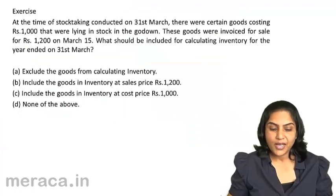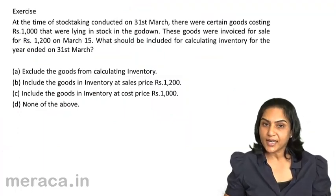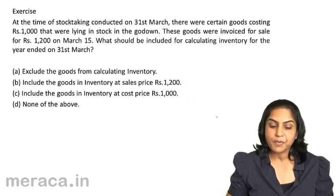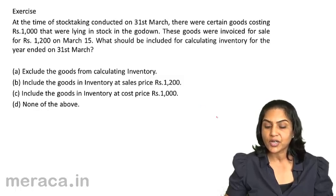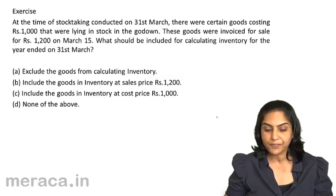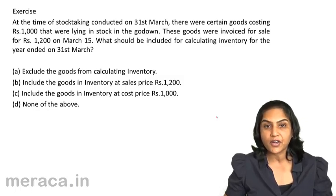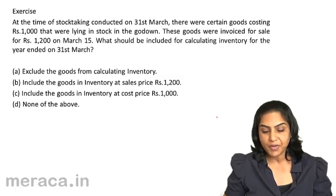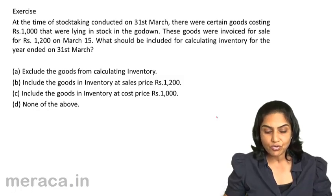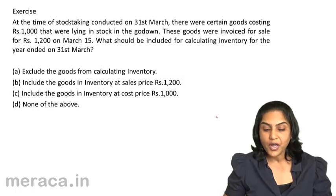Let us consider a small exercise. At the time of stock taking conducted on 31st March, there were certain goods costing Rs. 1000 that were lying in stock in the godown. These goods were invoiced for sale for Rs. 1200 on March 15th. What should be included for calculating inventory for the year ended on 31st March? Should we exclude the goods from calculating inventory? Include them at a sales price of Rs. 1200? Include them at a cost price of Rs. 1000? Or none of the above?